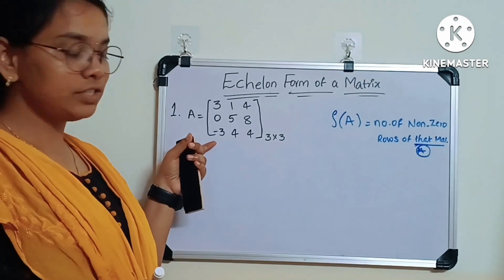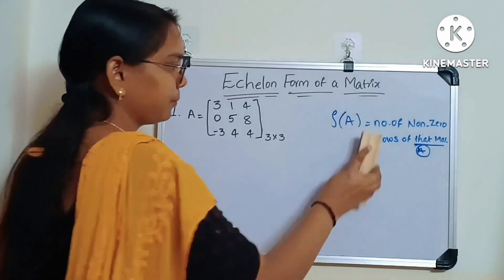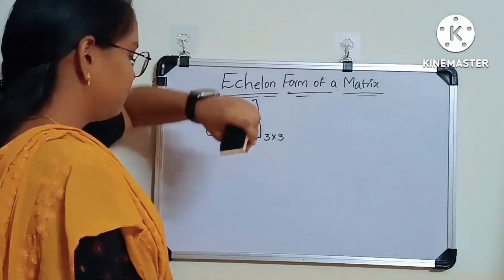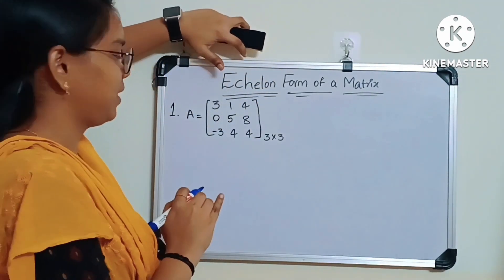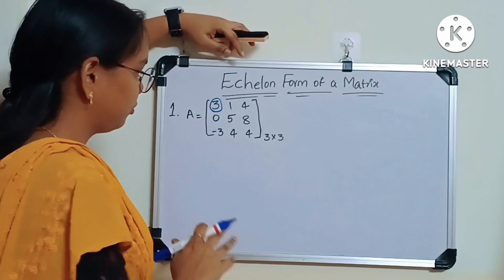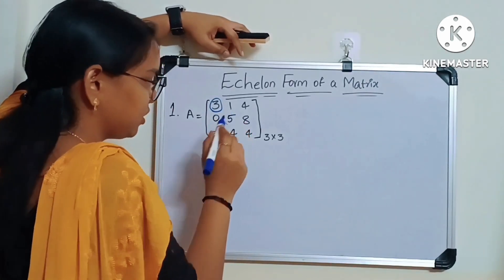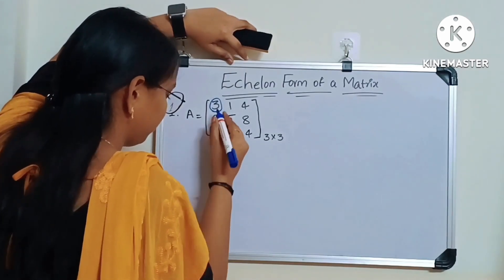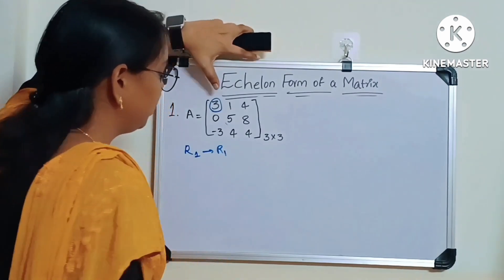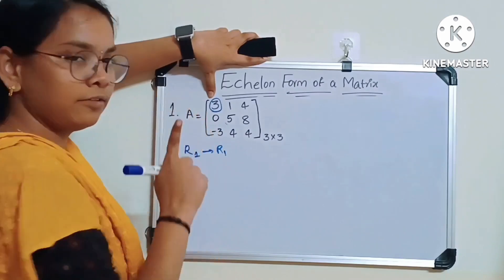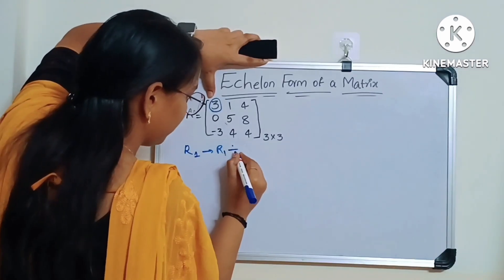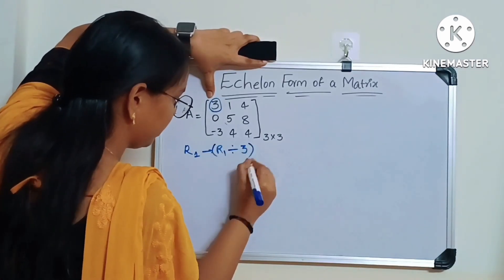Now we will convert this given matrix into the echelon form of matrix A. We will start solving this problem. As per the definition of the echelon form of matrix A, we have to convert the leading nonzero element of each nonzero row into 1. For that we will use row operations. First, we will convert row R1: R1 tends to R1 divided by 3.